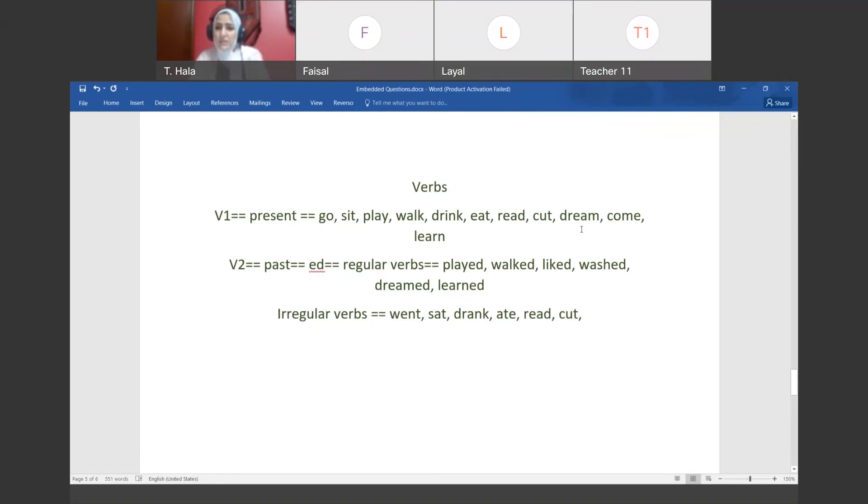What do we have here? Dream, we say dreamed. Learned. All of these, any verb that takes E-D to become past, we call it a regular verb. There are other verbs that don't take E-D to become in the past tense. They take another form. A letter changes in them, they stay as they are, their pronunciation changes, a new word comes. We call these irregular verbs. Like what? When I come to say go - he goes - went, a new word. Sit - he sits - sat, for example. Drink - drank. We changed a letter. Eat - ate.